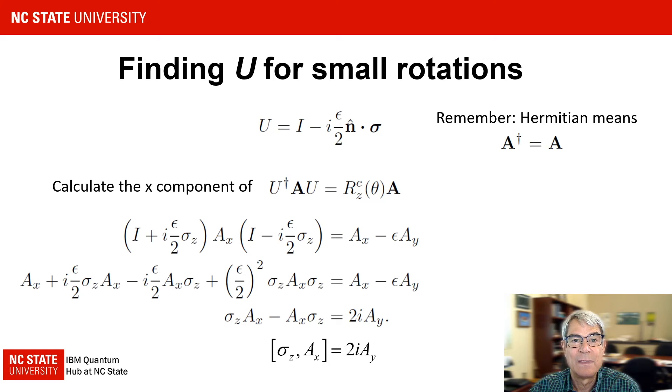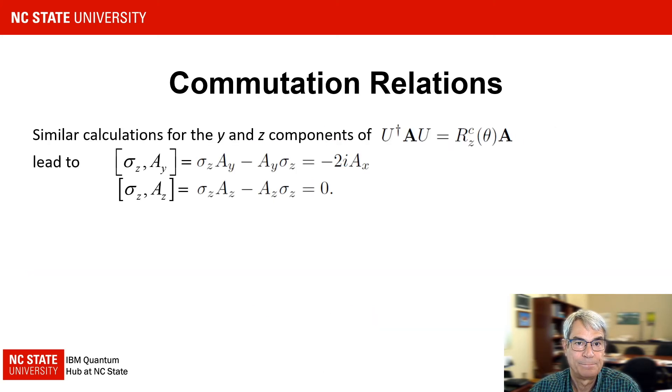Now if Ax and sigma z were ordinary numbers, this last equation would imply that Ay equals zero since ordinary numbers commute. However, if these operators are represented by matrices, then more general solutions can exist since matrix multiplication is not commutative in general. Similar calculations for the y and z components of the expression we are evaluating lead to these additional commutators involving sigma z and Ay and sigma z and Az.